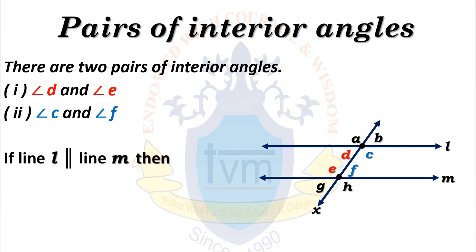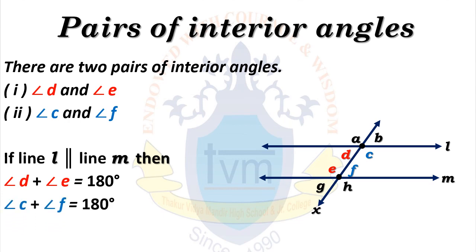If line L is parallel to line M, then angle D plus angle E equals 180 degrees, and angle C plus angle F equals 180 degrees. This means if any transversal intersects two parallel lines at different points, then the interior angles formed will be supplementary — that is, their sum is 180 degrees.